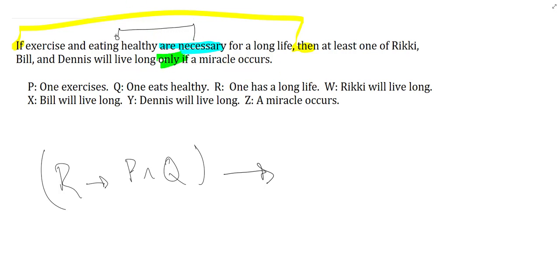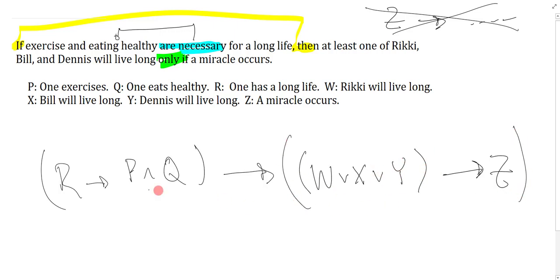Now I want to say at least one of these will live long only if a miracle occurs. Without the only it would say if miracle then at least one, so that means I know over here it should be reversed because the only reverses the direction. So this should say at least one of these arrow Z.